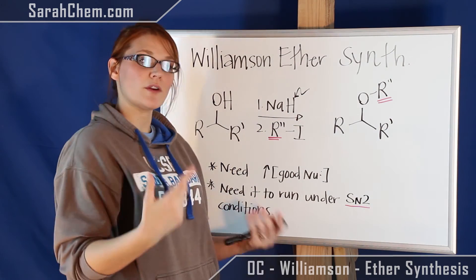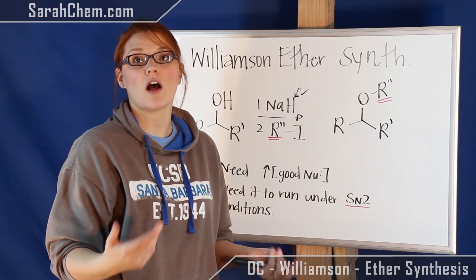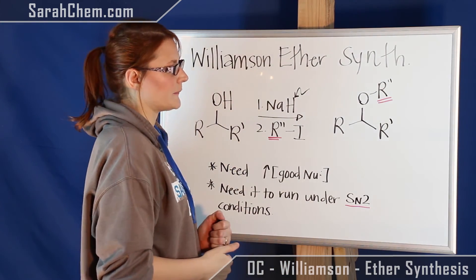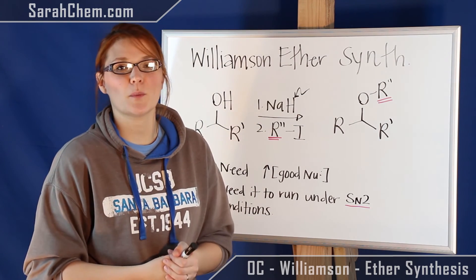Because an iodide would be more stable with a negative charge than an oxygen would. So when these two things happen, you ultimately wind up with this product here. And that's pretty much what's happening in the Williamson Ether Synthesis.